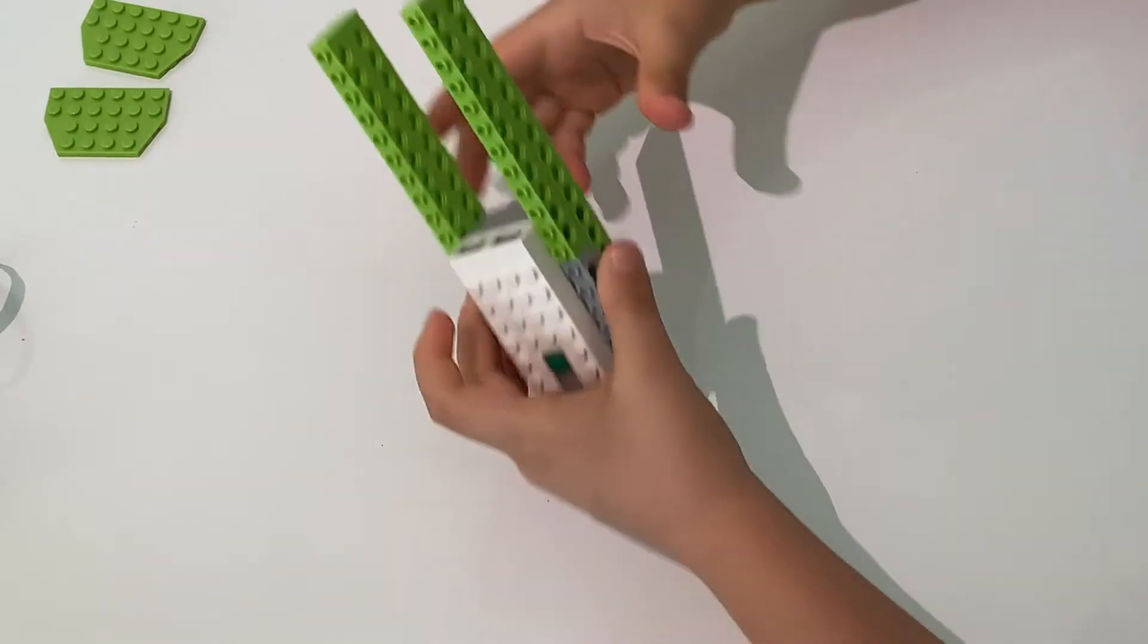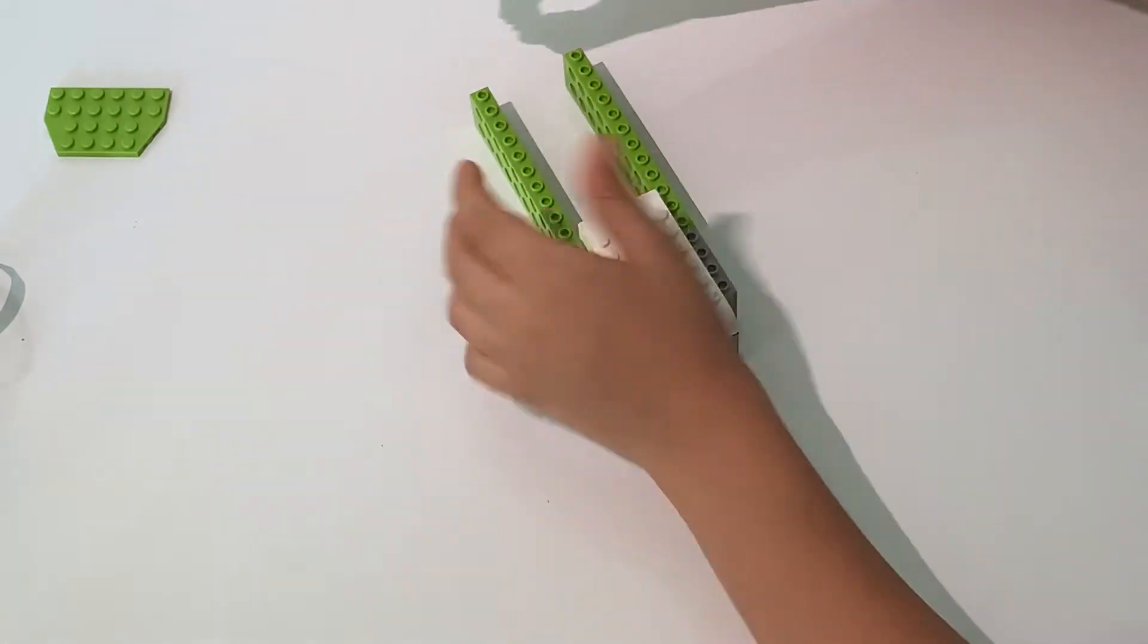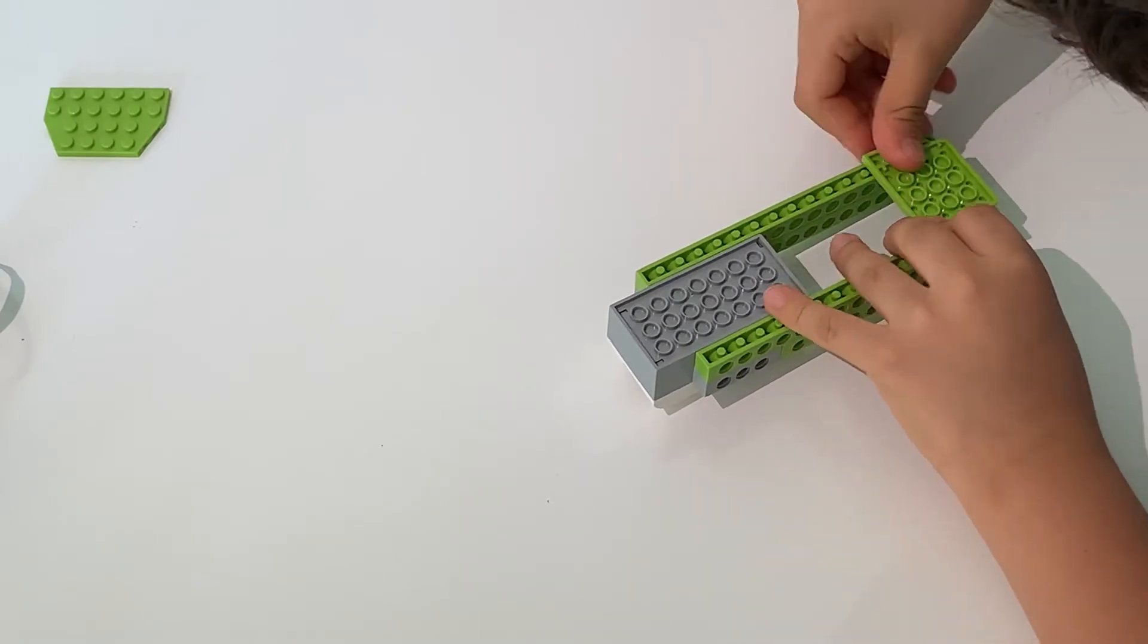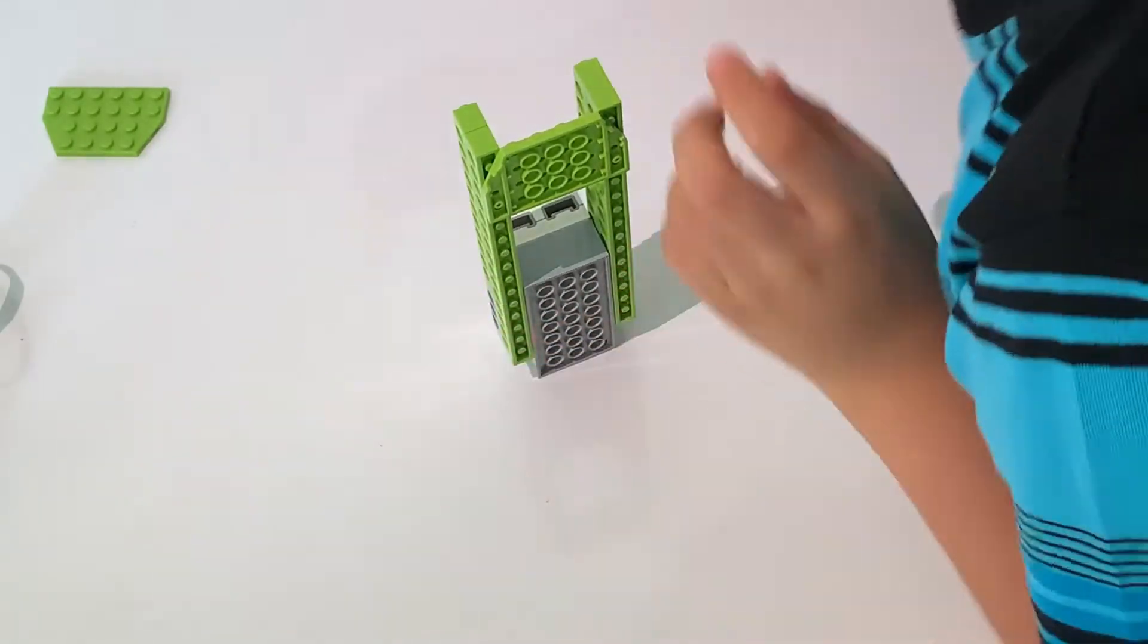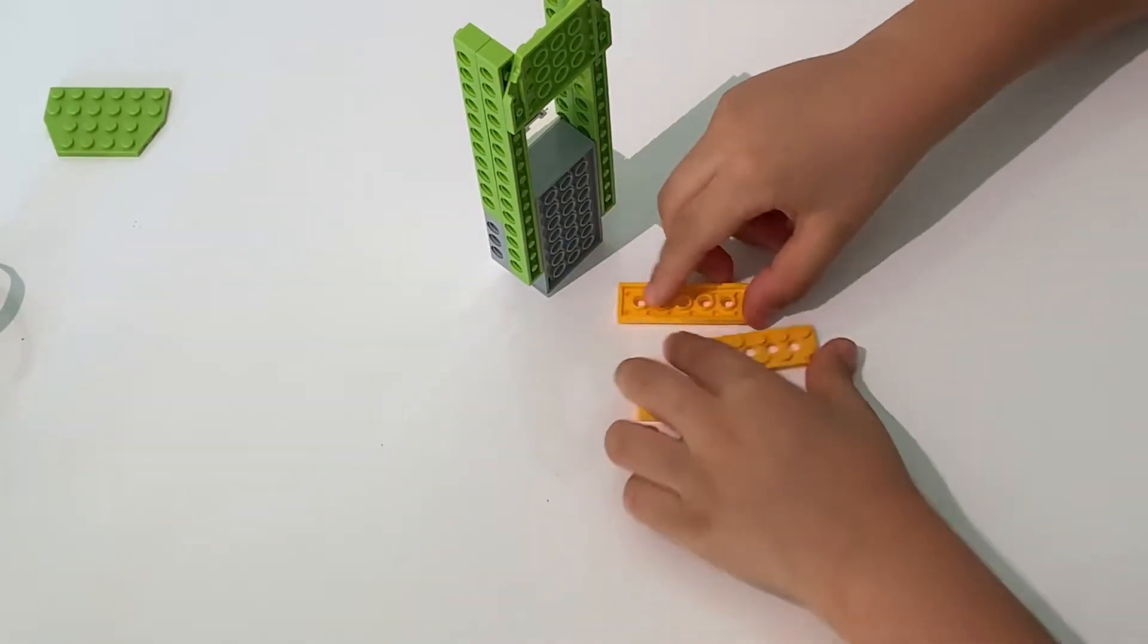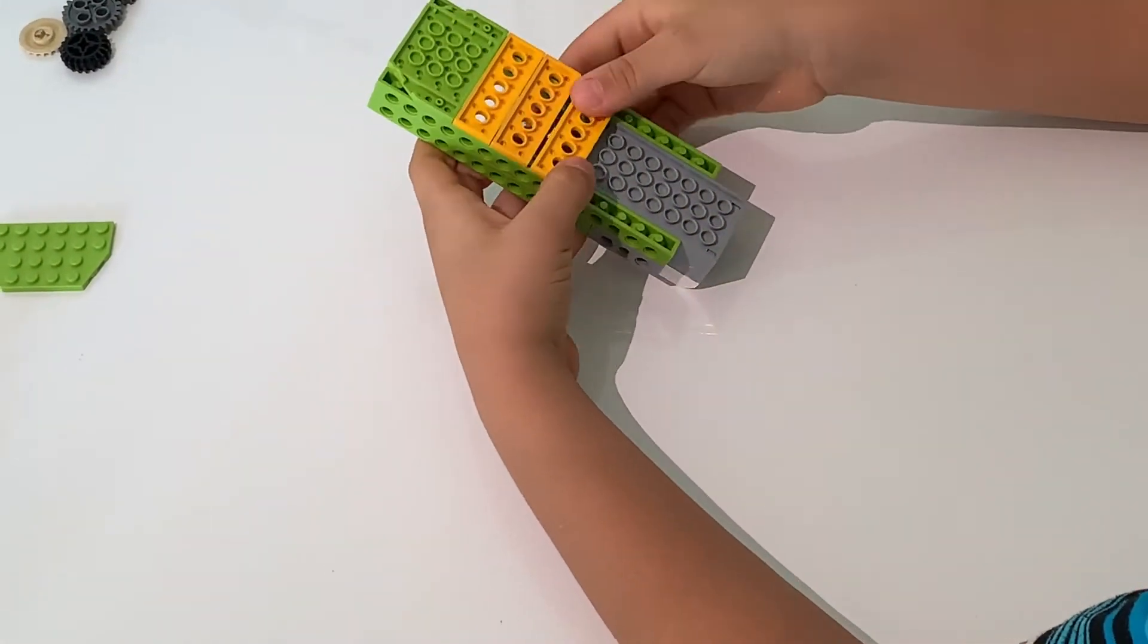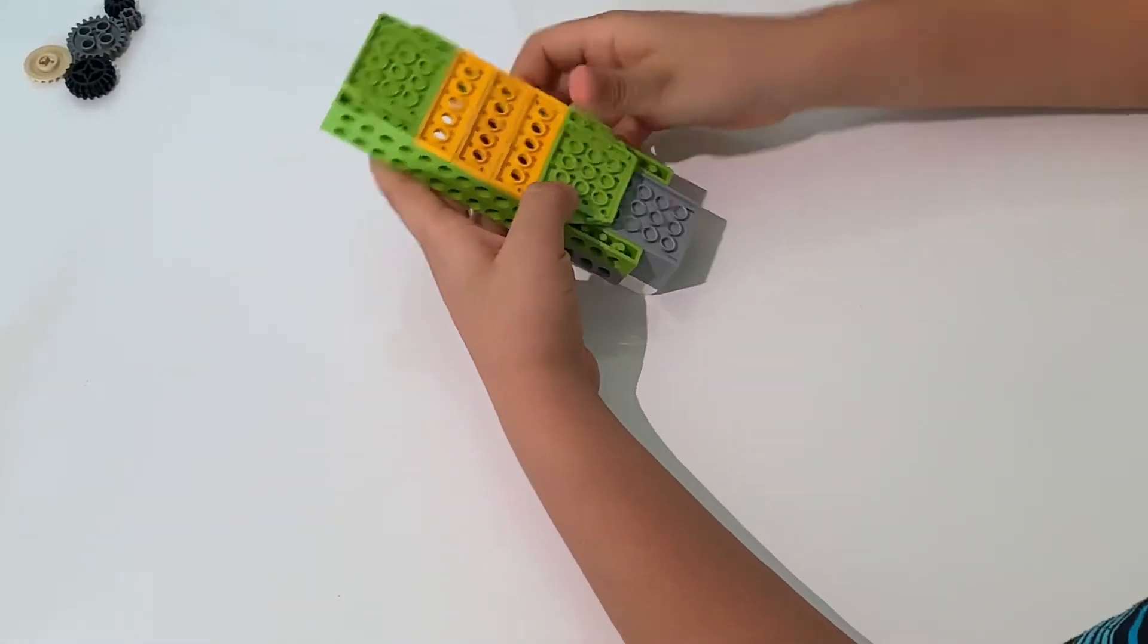Here, like this. So now, we'll grab one of these green pieces and add them here. Like this. And now, we'll grab three of these 2x6 dot long yellow pieces and place them here, here, and here. And we'll also grab another one of these green pieces and place them here.